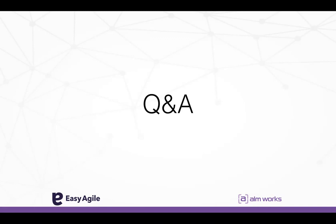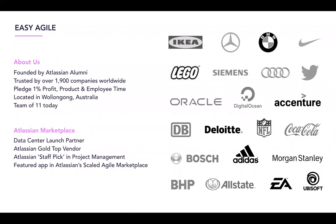That's all the questions we have for today. If we missed any, we'll be sending an email with the answer. Thank you to everyone who submitted questions during the session. We'd like to give a quick roundup of the two companies covered today. Easy Agile is a team of 11 based in Wollongong, Australia — about an hour and a half south of Sydney — and they support over 1,900 companies around the world. If you're interested, head to their website for more information.